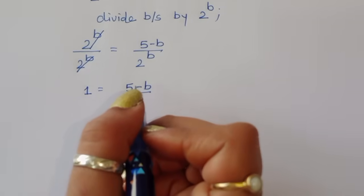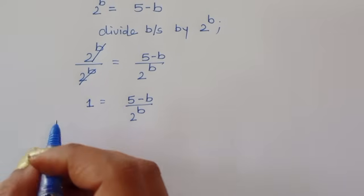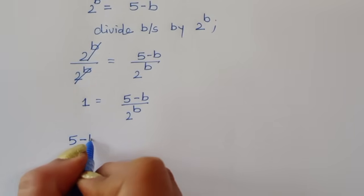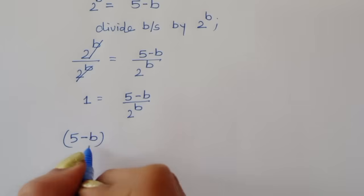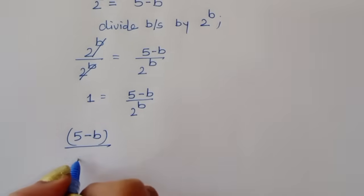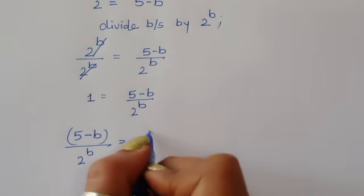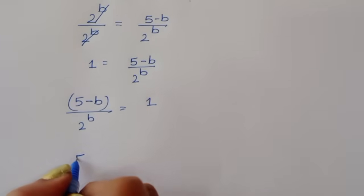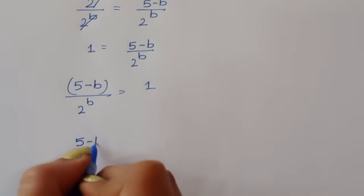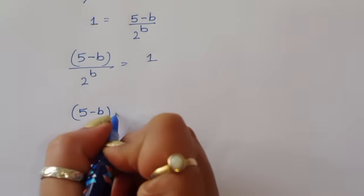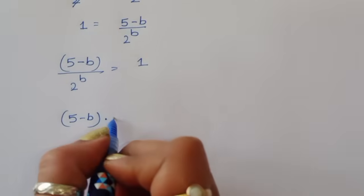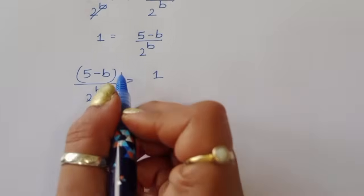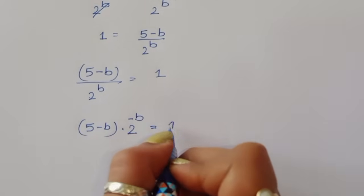Now we can write 5 minus b divided by 2 power b is equal to 1. In another form, we can write 5 minus b times 2 power minus b in the numerator is equal to 1.